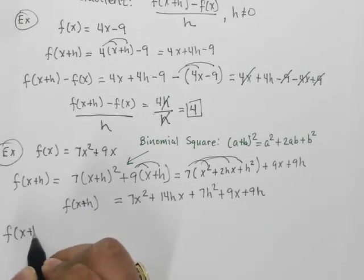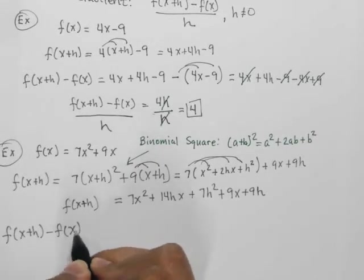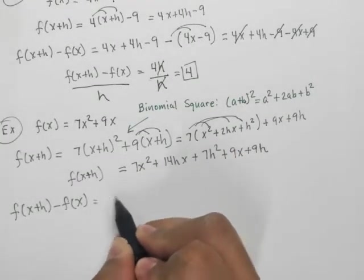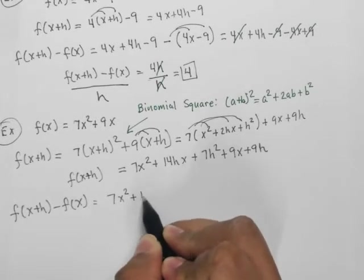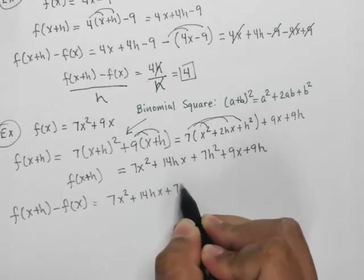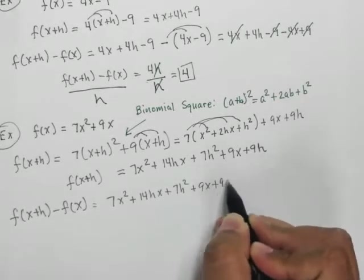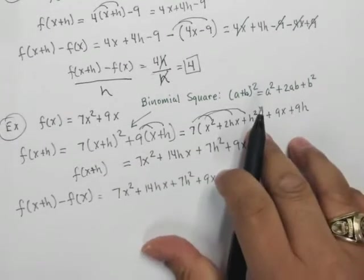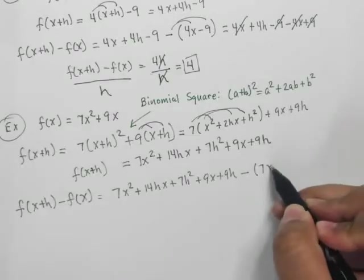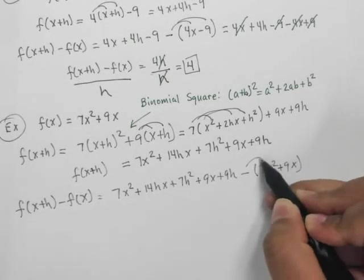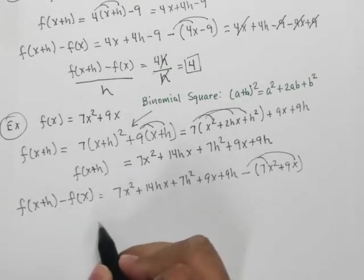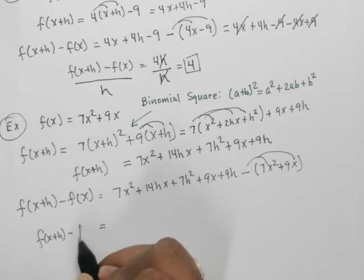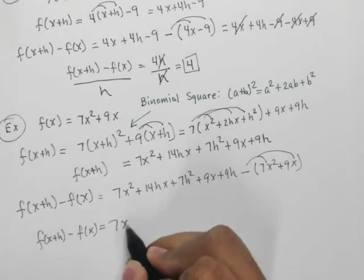And now my job is going to be to find f of x plus h minus f of x, which is the difference again here in the difference quotient. So here's the difference. We've got 7x square plus 14hx plus 7h square plus 9x plus 9h. It's quite a mouthful there. So minus, and then I'm going to subtract f of x. This guy right there. So minus 7x square, and then plus the 9x, and I distribute. So again, let me write that again. It is 7x square